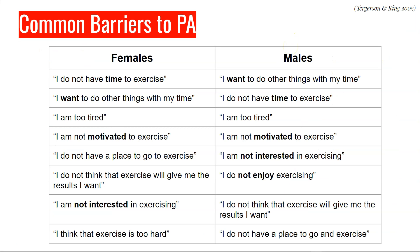To help us continue to reflect on common barriers and strategies we might encounter in terms of physical activity across our entire lifespan, let's talk about what some other people have found to be common barriers. In this study, females reported their number one reason for not participating in physical activity was not having time to exercise. Males reported that their number one reason was wanting to do other things with their time. Some other common barriers were being too tired, not feeling motivated, not having a place to exercise, thinking that exercise is too hard, and not enjoying exercise.